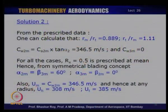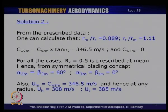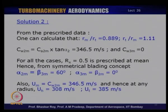With degree of reaction Rx = 0.5, the symmetrical blading concept applies. At the mean: α₂m = β₃m = 60° and α₃m = β₂m = 0°, as prescribed. This makes the problem simpler to handle. Many turbines in the past used these simpler design prescriptions and operated well. Before computational fluid dynamics was available, such simplified prescriptions were standard, and they worked fine.